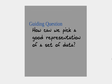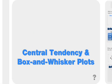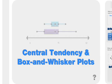Our guiding question is how can we pick a good representation of a set of data? If we've got a whole bunch of data, how do we know what's the best way to represent it? Well, today we're going to learn about central tendency, if you haven't already, and box and whisker plots. What on earth is a box and whisker plot? Well, I'm glad you asked, because bam, here is one.